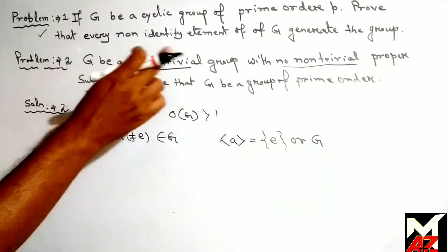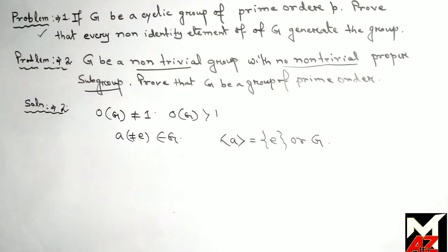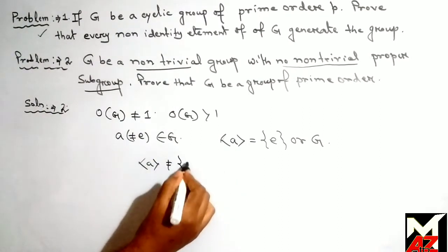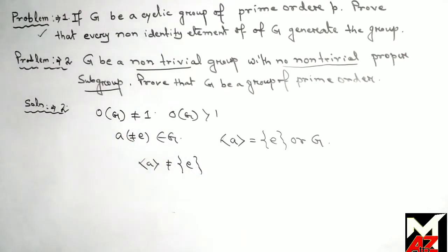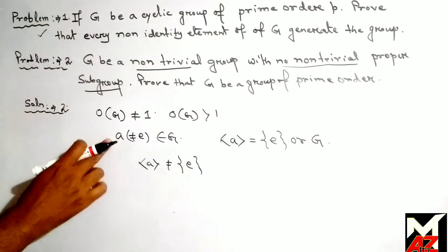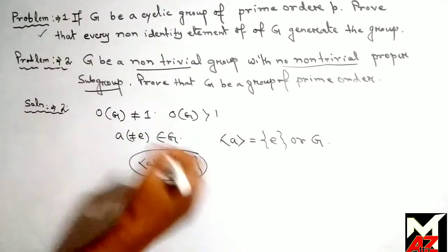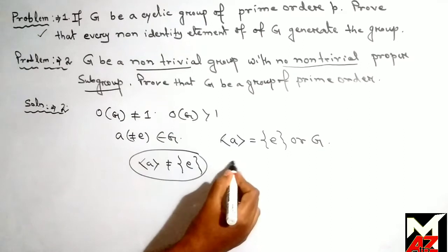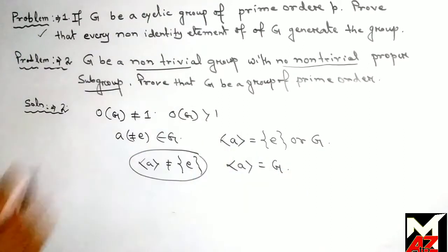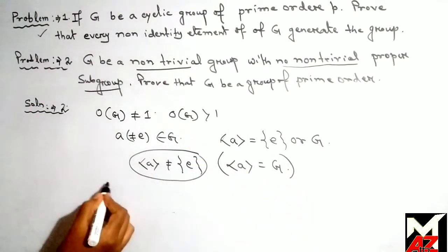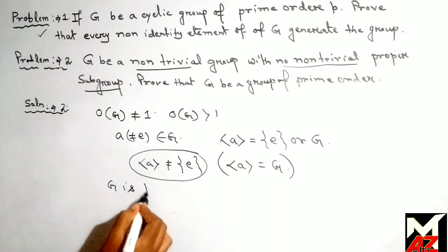This cyclic subgroup generated by a must be either the trivial subgroup or G itself, because G has no non-trivial proper subgroup. But it cannot be the trivial subgroup because a is itself a non-identity element. So the only option remaining is that the subgroup generated by a equals G. From this relation we prove that G is a cyclic group.